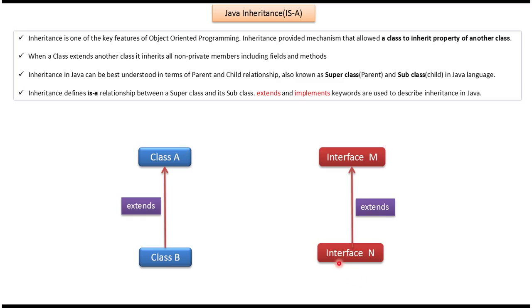Here you can see Interface N extends Interface M. So Interface N acquires all properties and methods of Interface M. In this case, Interface N is called subinterface and Interface M is called superinterface.